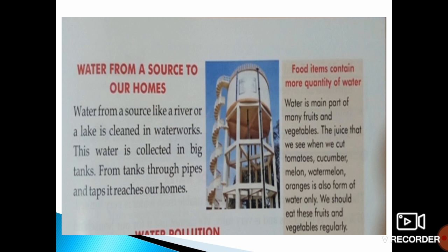Now move towards the yellow box — Food Items Contain Water. Water is a main part of many fruits and vegetables. The juice we see when we cut tomatoes, cucumber, melon, watermelon, and oranges is also a form of water. We should eat these fruits and vegetables regularly.